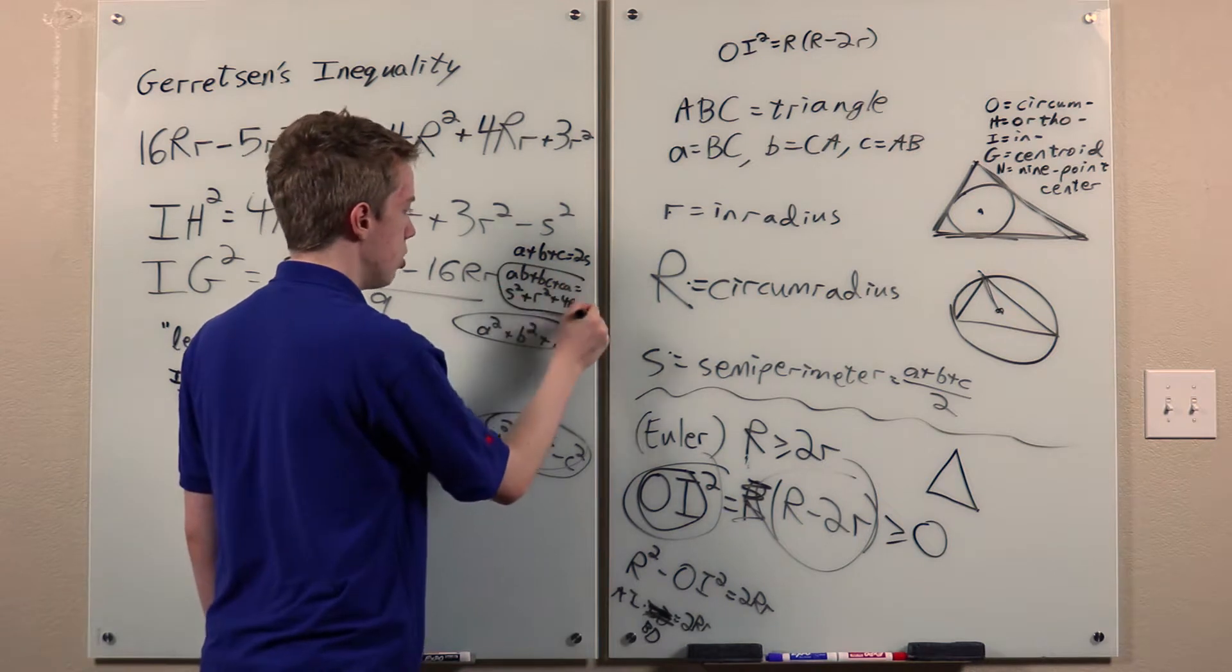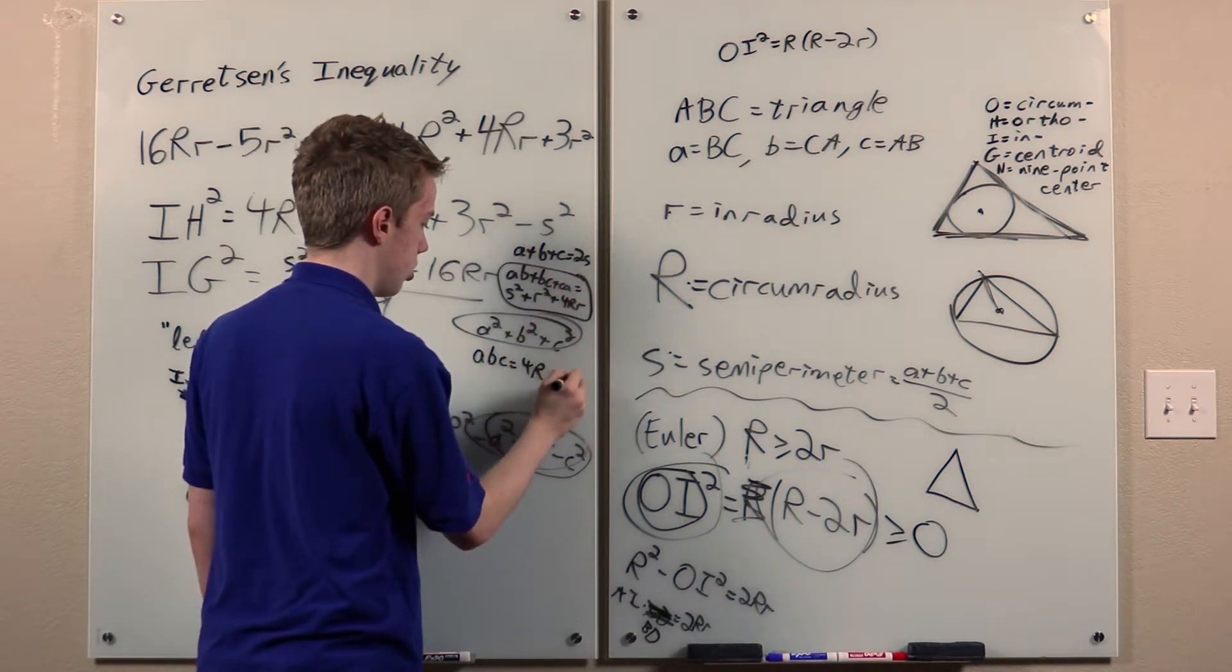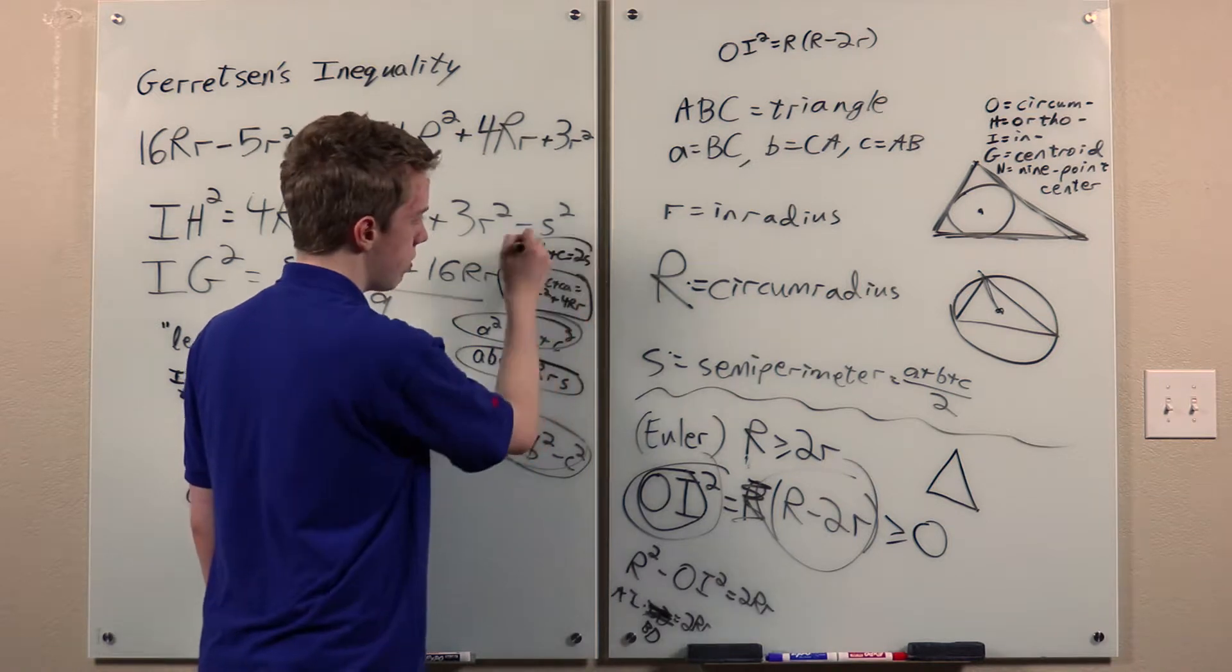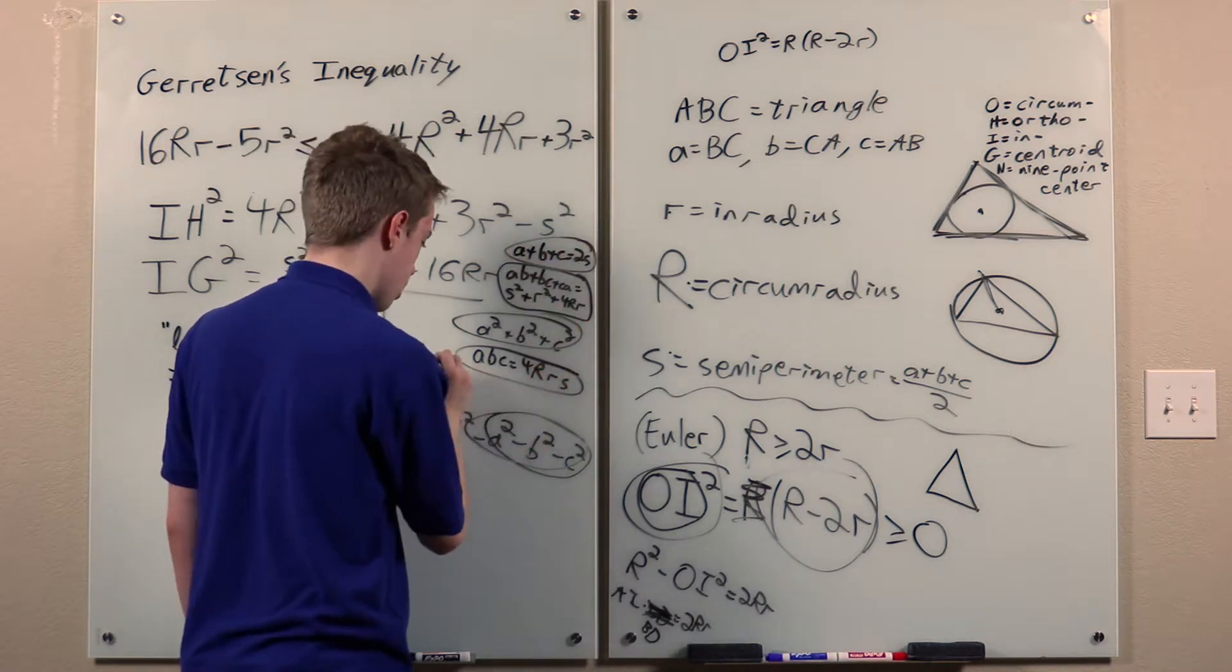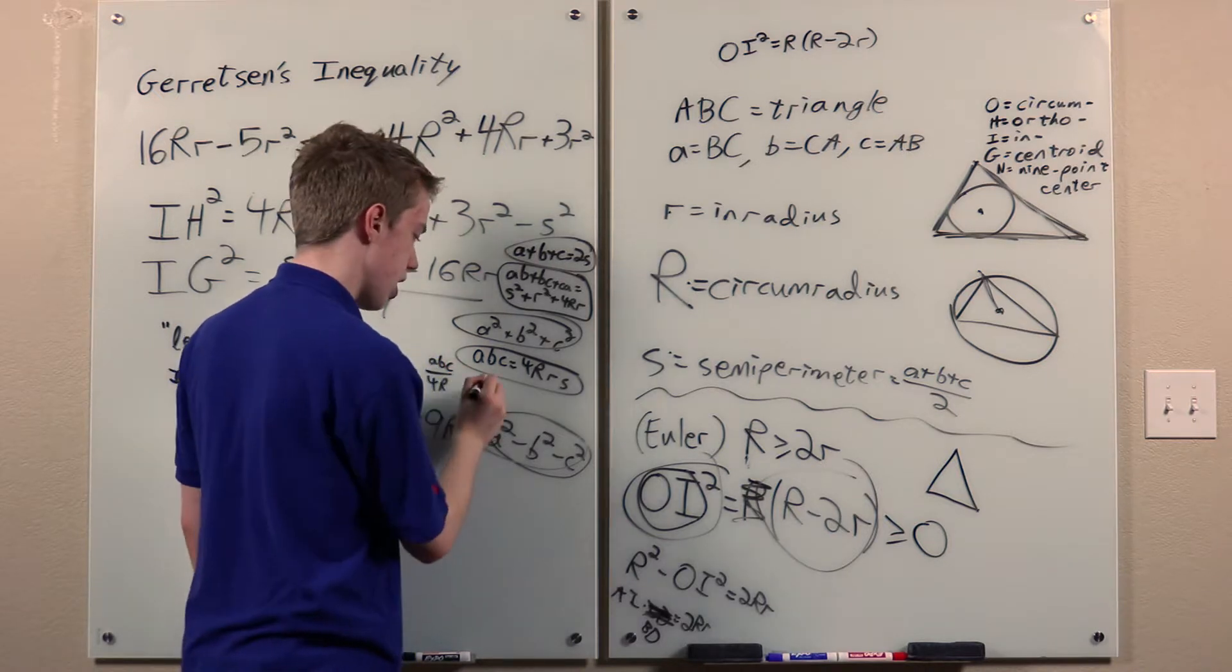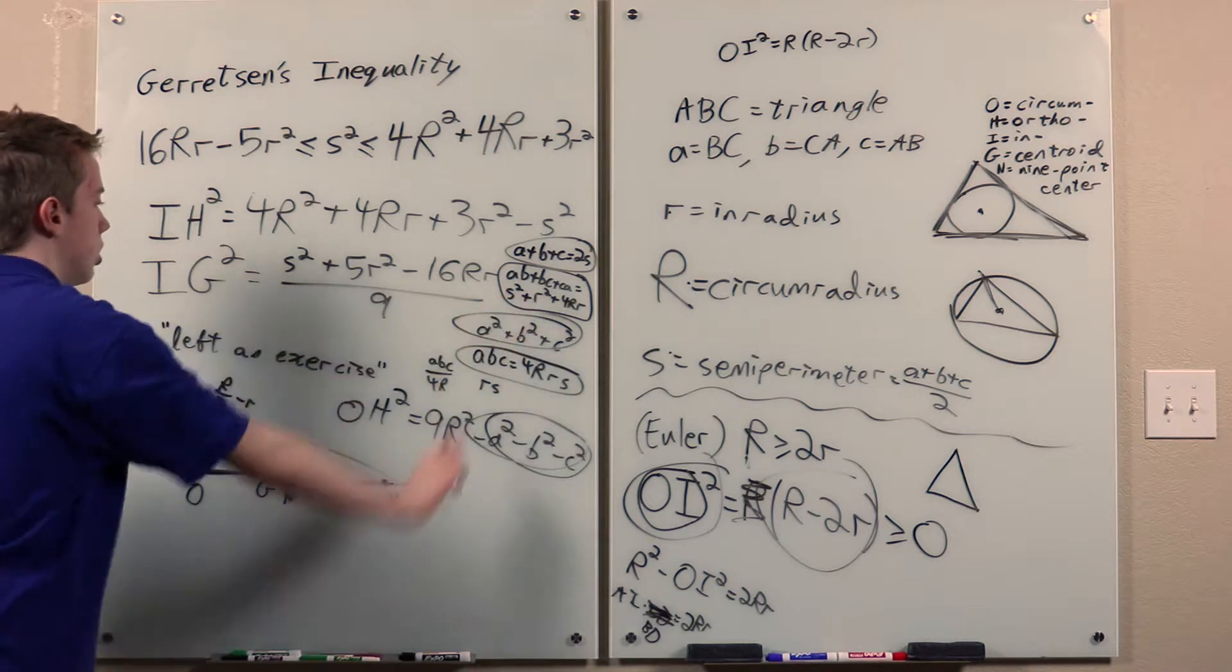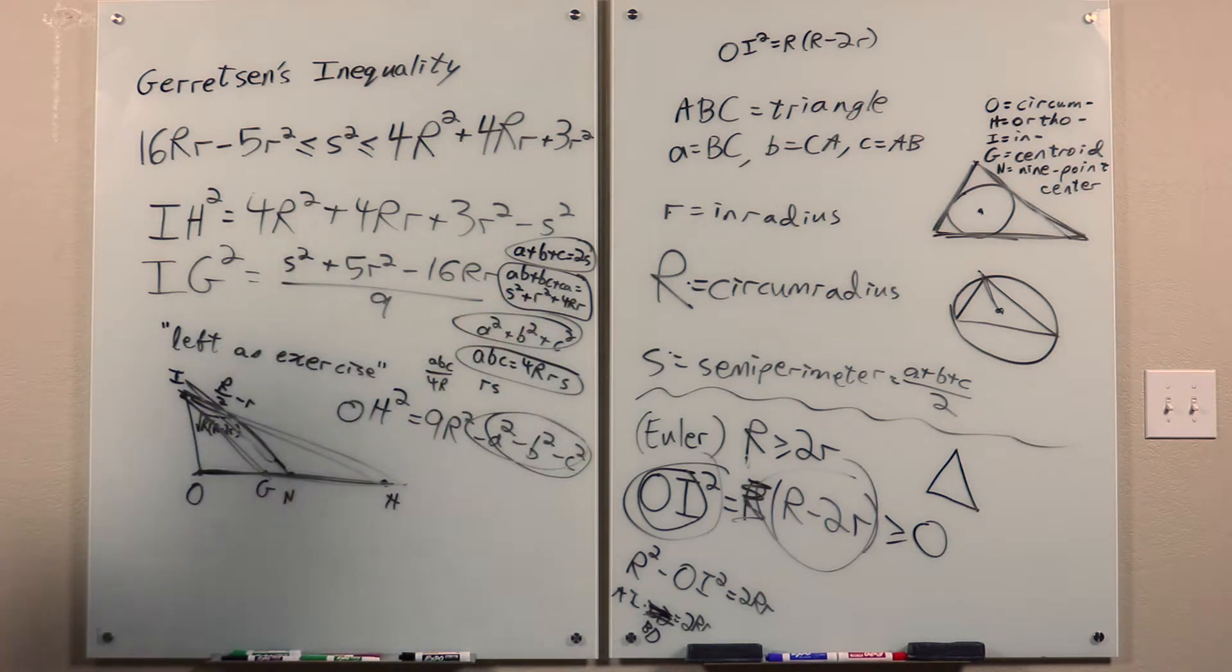I think I'll get back to proving this part later. We also have this. This is by the definition of S. And to prove this, we note that this is the area of ABC and this is the area of ABC, so they're equal. But I'll get back to this one in a little bit. So that's Gerretson's inequality.